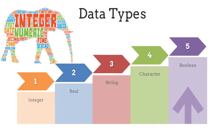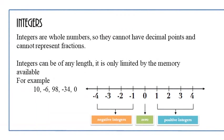That takes us then into what are the different data types. You have, for example, integers, real, string, character, or boolean.